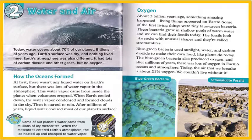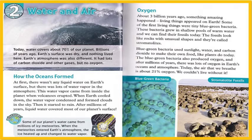Blue-green bacteria use sunlight, water, and carbon dioxide to make their own food, like plants do today. The blue-green bacteria also produced oxygen, and after millions of years, there was lots of oxygen in Earth's oceans and atmosphere. Today, the air that we breathe is about 21% oxygen. We couldn't live without it.